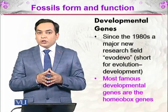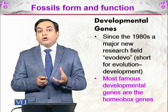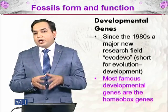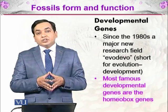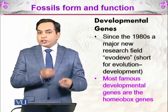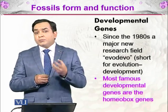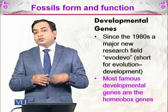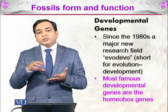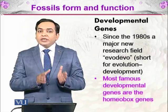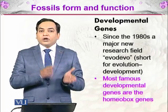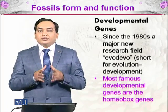Vestigial organs are organs that persist in the body even though they have reduced or no known function. For example, the appendix is a vestigial organ that may have had other functions in our ancestors but now has no clearly established function, though some scientists suggest it plays a role in the production of vitamin K in the intestines. Finally, patterns of growth are also conserved and can indicate whether one clade is related to another in evolutionary history.